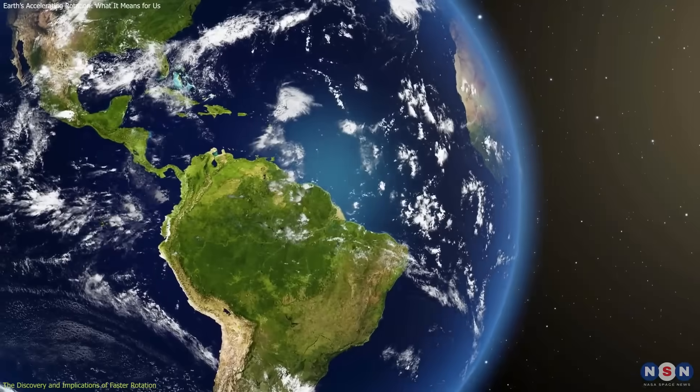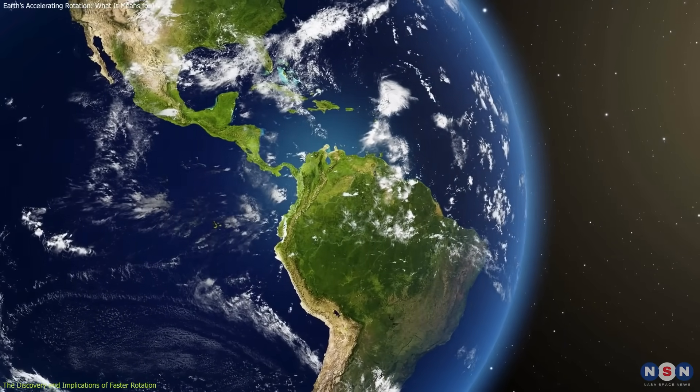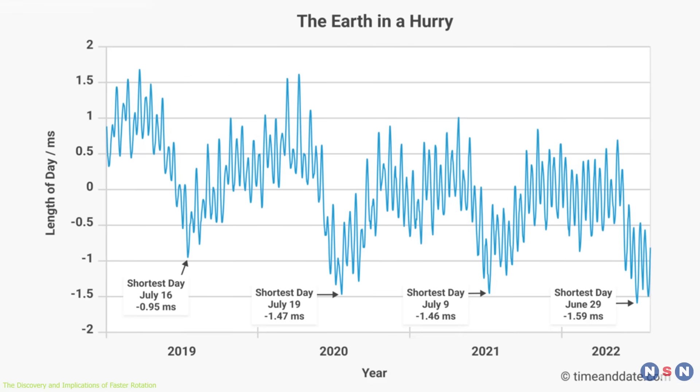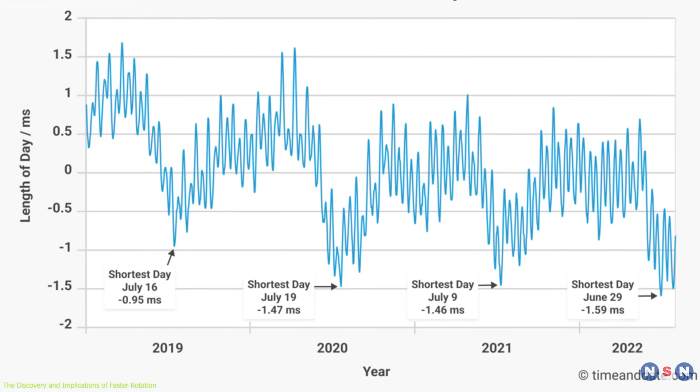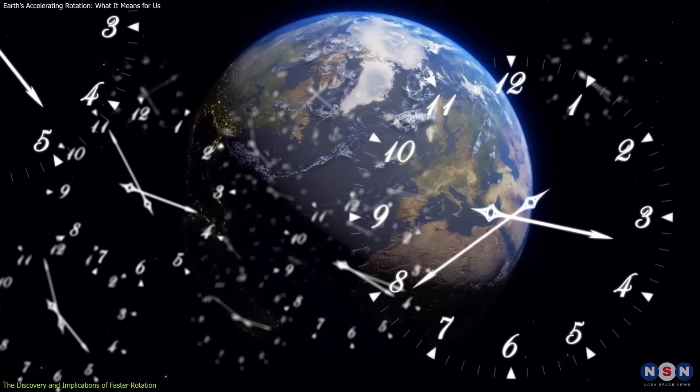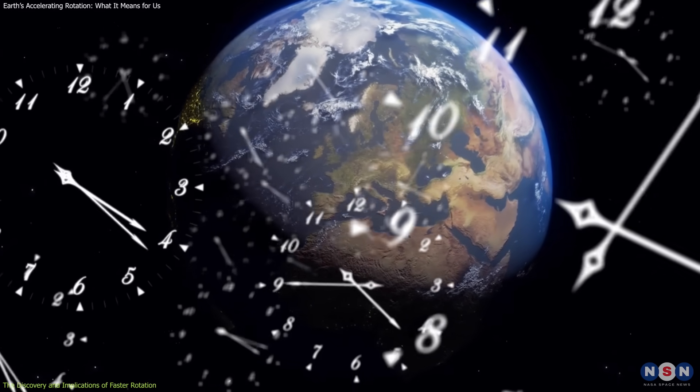The discovery of Earth's accelerating rotation has caught the attention of scientists. In 2020, researchers first detected that Earth was spinning faster than usual. And by 2024, the planet set a record for the shortest day.